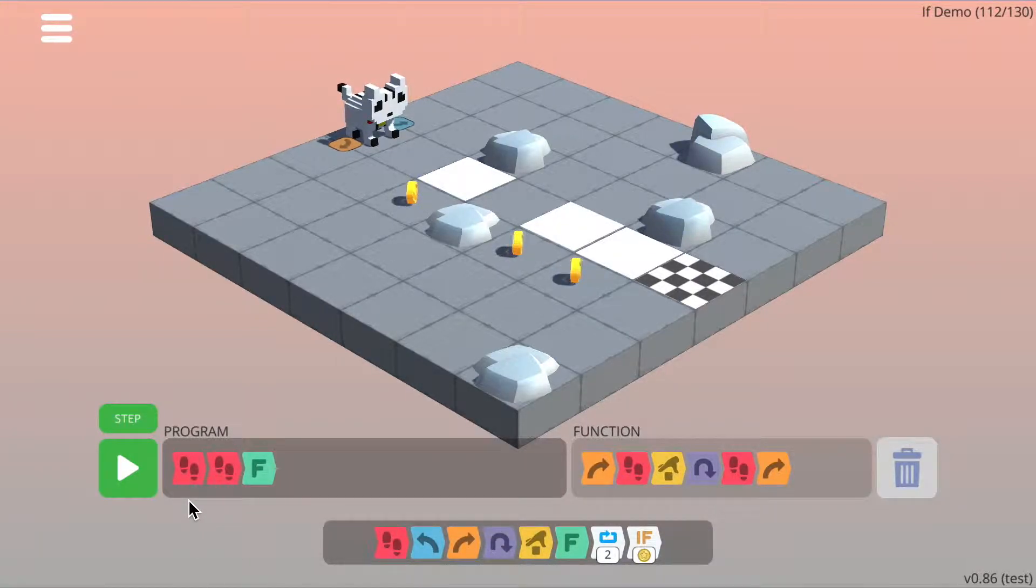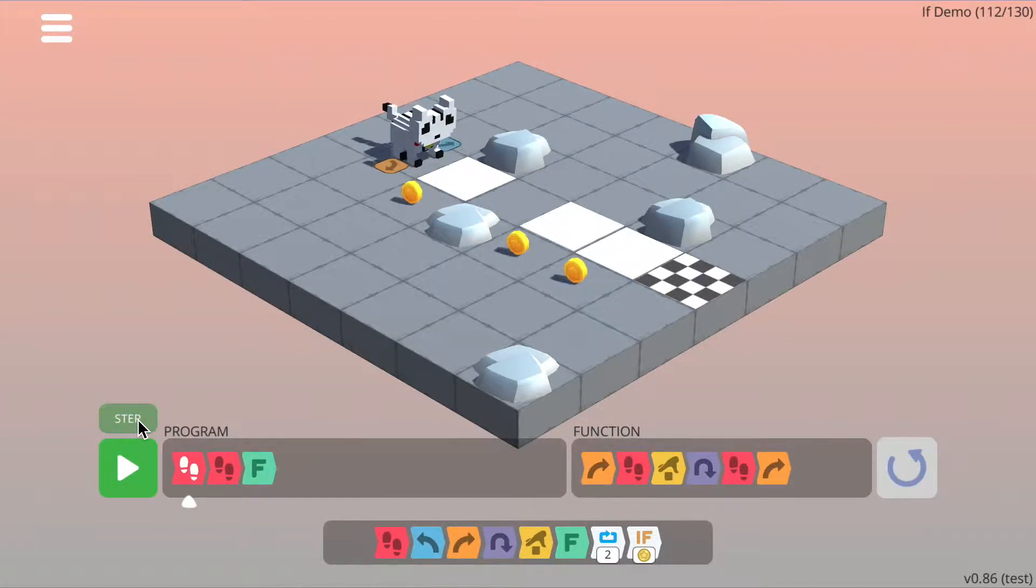I'm going to step through the code now so you can see how that works. So if I press step, I walk forward once. If I press step again, I walk forward again. Now, when I press step again, it's going to jump into the function and start executing that code there. So if I press step, it jumps into the function. The first thing it does is turn right, so you can see the cat's turned right, and now the cat walks forward, picks up, turns around, walks forward, turns right.